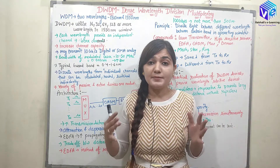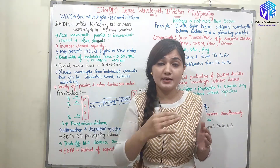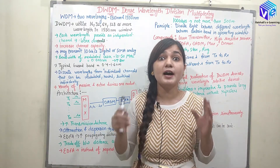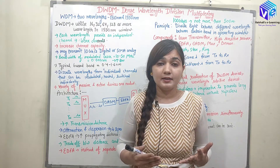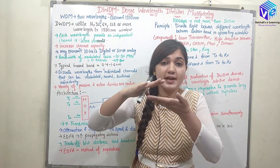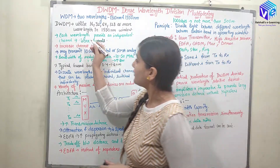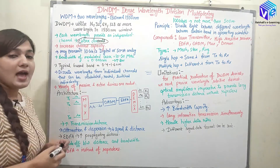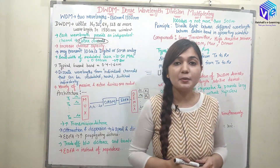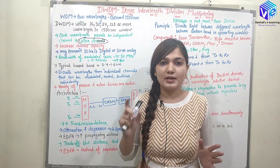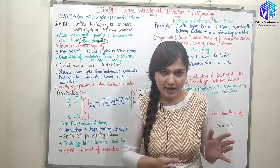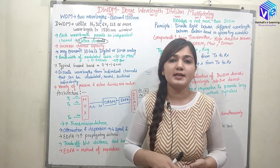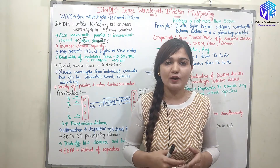In DWDM, I can send a lot of signals parallelly. The channels are closer together, and we are sending a separate wavelength in each channel. Each channel has separate transmission of separate signals, and these channels are spaced very closely. This is the reason it is called DWDM.